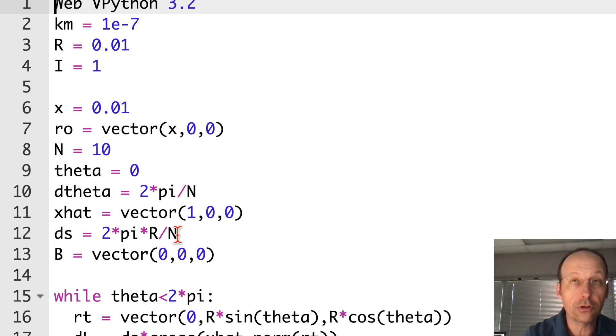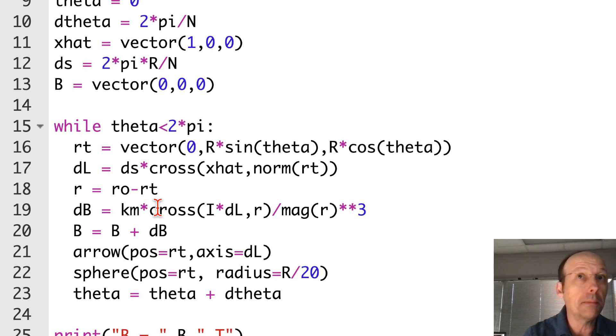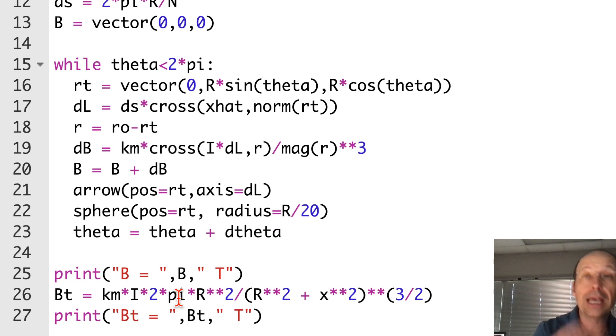Ds is the length of each little piece. That's 2 pi R, the whole length of the ring divided by the total number of pieces. Then B is the magnetic field to add up the components. RT goes through and finds the location, the vector location of the piece. That's what I call RQ normally when I write it down. That's rotating around in 10 pieces, finding those locations. DL is the vector. It has a length ds, and to find the direction I can use the cross product between x hat and the position. I get a vector that's perpendicular to both in the direction of the circle. Then I find the vector R, calculate the magnetic field due to that piece, add it to the total, and keep repeating.